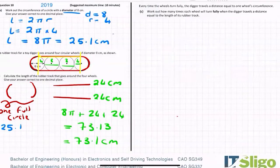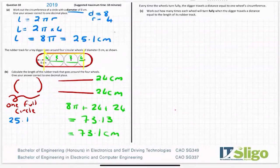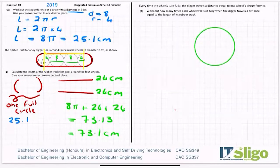Now, part C. Every time the wheel turns fully, the digger travels a distance equal to one wheel's circumference. So what does that mean? And again, strange the first time you read it. But if you think about a wheel and you think about a starting node on it, and I've literally just put a random point on that circle.